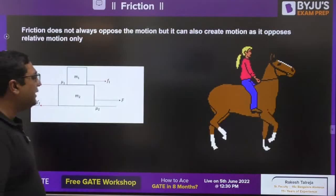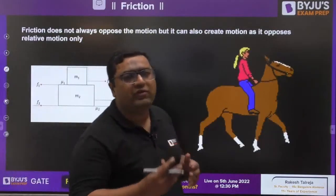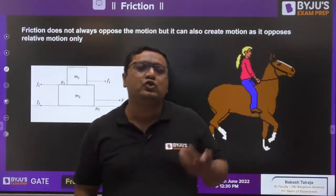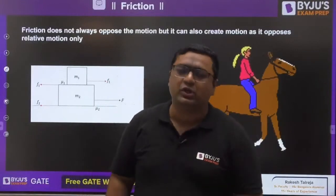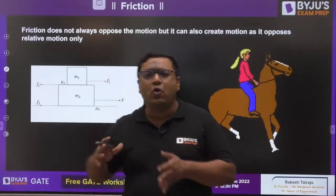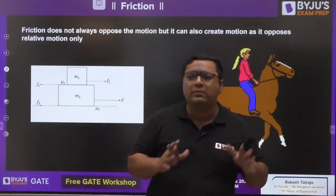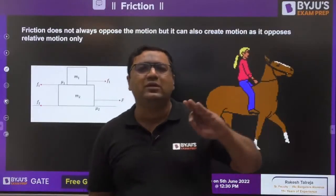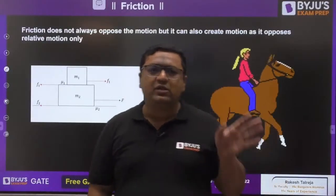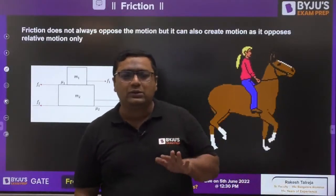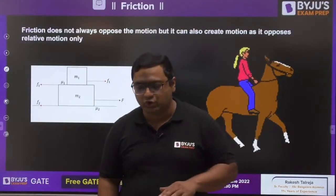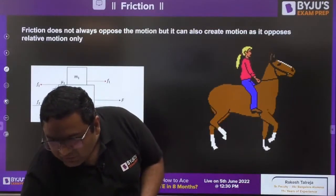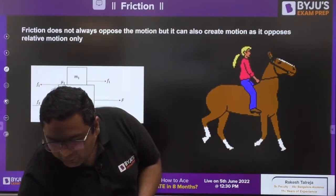Friction does not always stop motion — it sometimes also generates motion. Because friction has no problem with motion; friction has a problem with relative motion. Friction only works to stop the relative motion. So if there is a probability of relative motion, friction will come into picture.